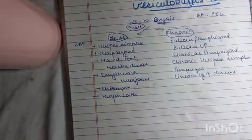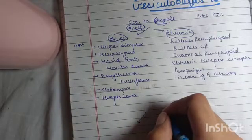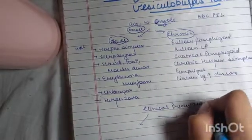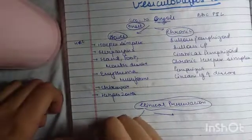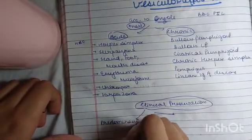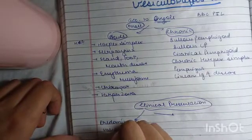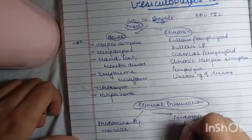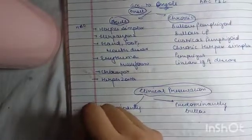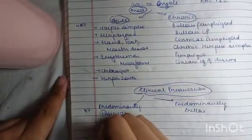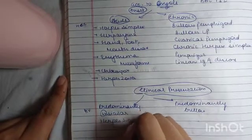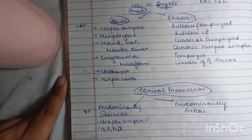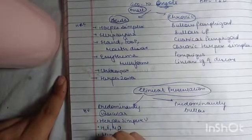Now we will classify them on the basis of the predominant clinical presentation. So first is predominantly vesicular and predominantly bullous. So again remember just H, V for this. So herpes simplex virus, hand foot mouth disease, then herpangina and varicella.